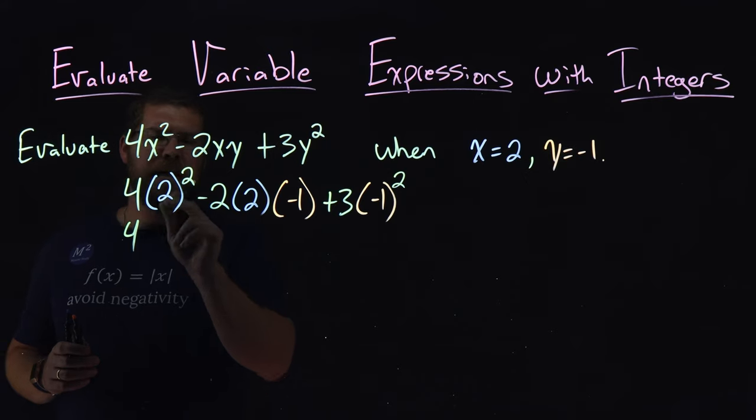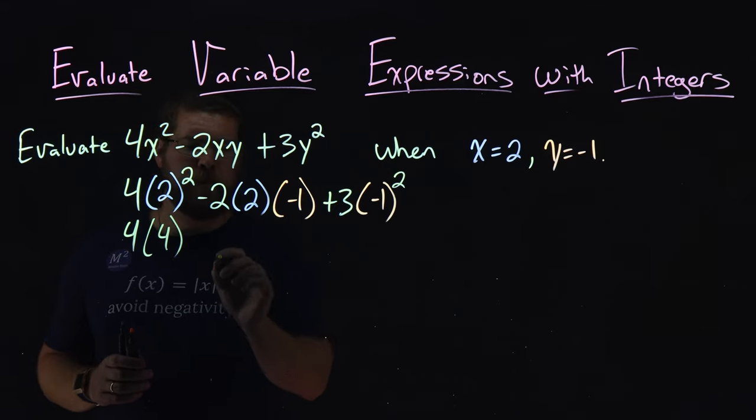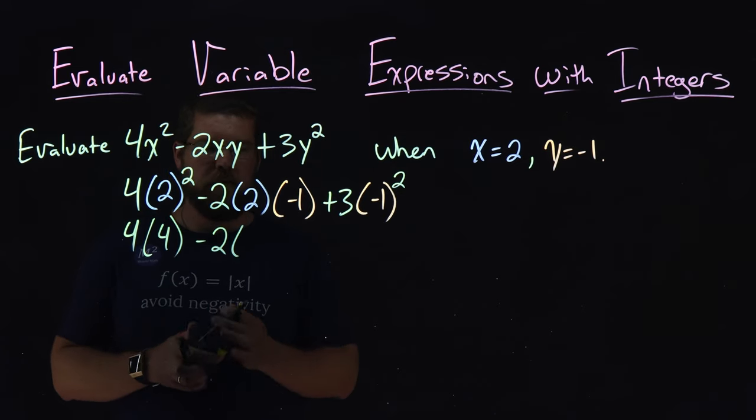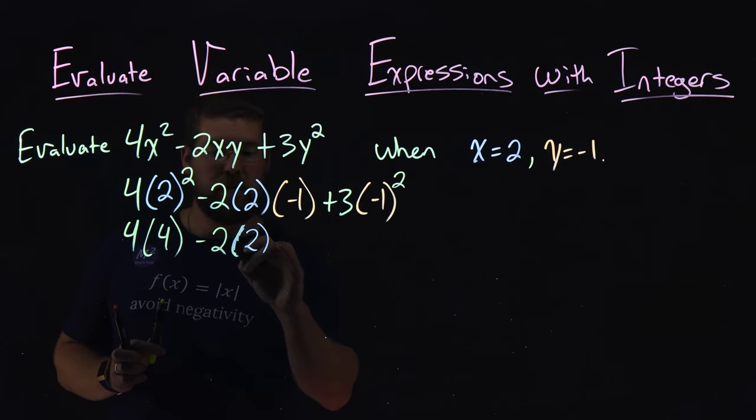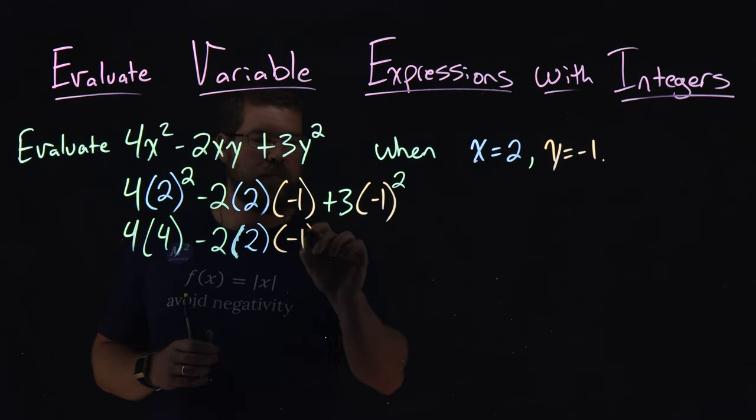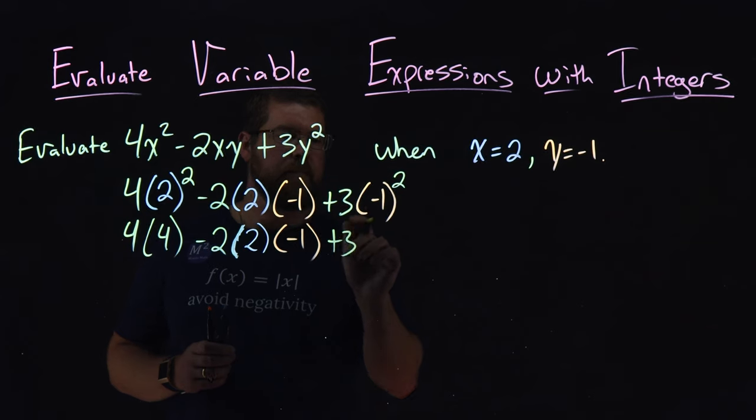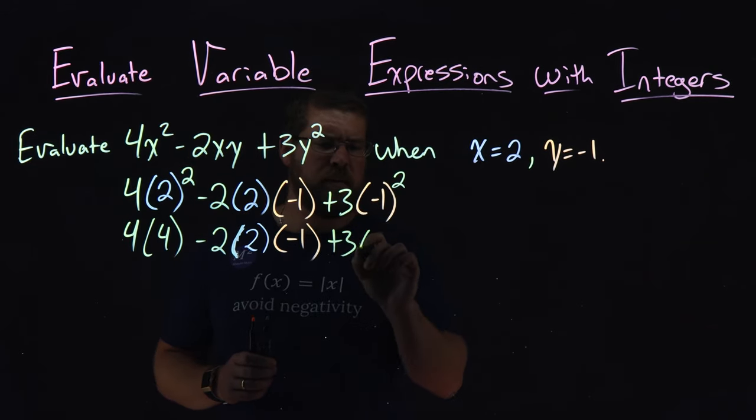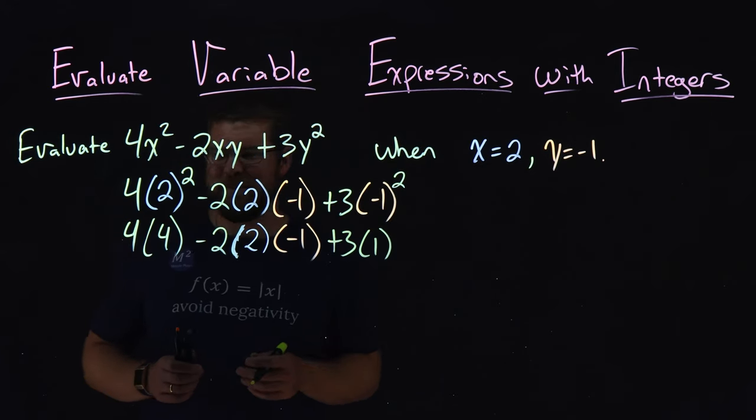We have 4 here, and 2 squared is also 4. So I'm going to write that right here. Minus 2, bring down the rest. I'll leave this 2 here and color-coordinated here. If I can, lots of green in here. There we go. Then orange, the negative 1. Then we have plus 3, and negative 1 squared comes out to be a positive 1, right? Negative 1 times negative 1 is a positive 1.